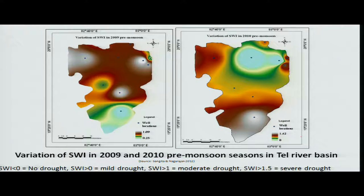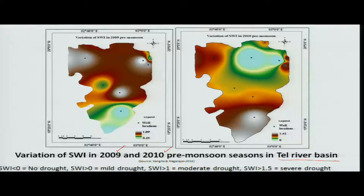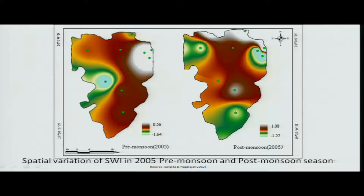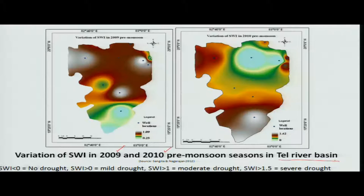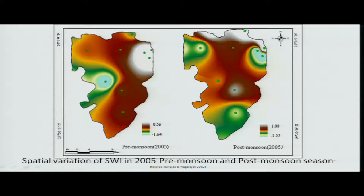The same calculation is transformed into a spatial mode. These are two different years — 2009 and 2010 — for the Tail river basin located in Odisha. You can see that in some portions on the northern side and southern side the groundwater level is very significant, requiring withdrawal control or improved recharge methods. The same comparison is also done for pre-monsoon and post-monsoon periods in 2005.